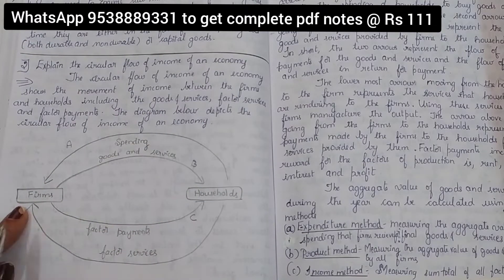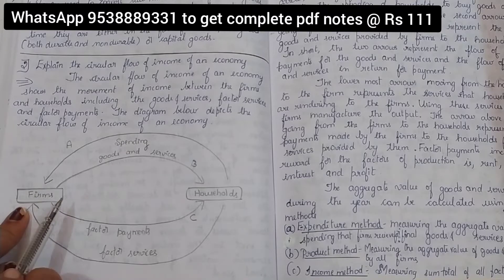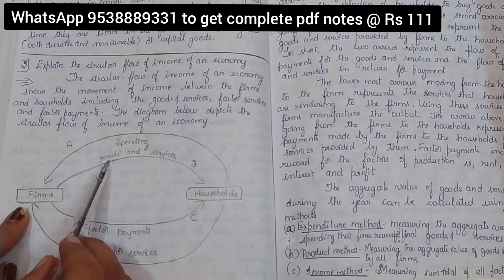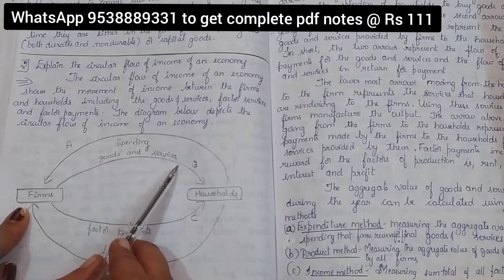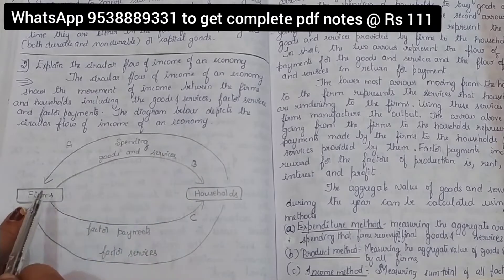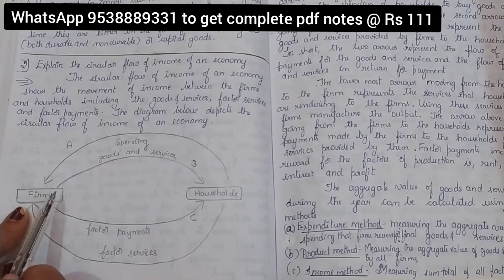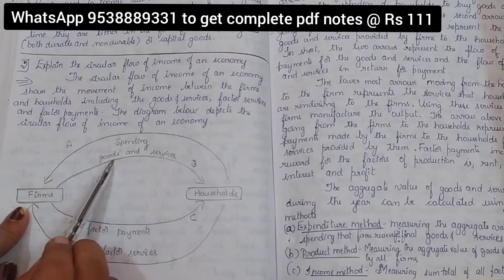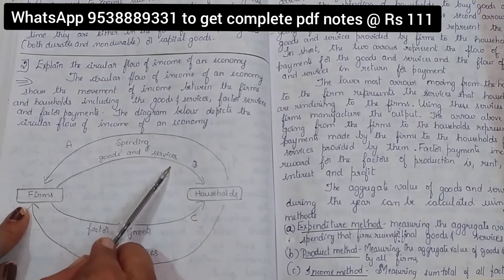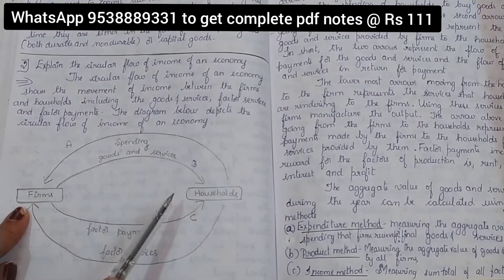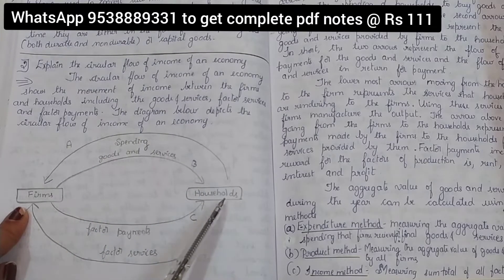Firms — all those companies and businesses which are providing goods and services. To whom? To the households.